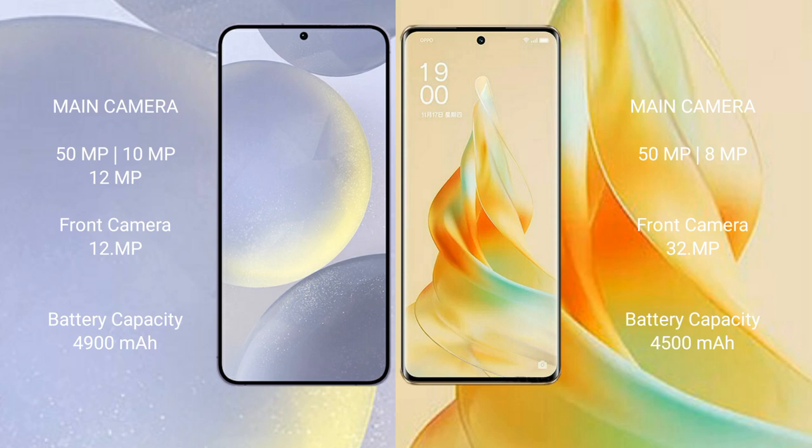Samsung Galaxy S24 Plus has a 4900mAh battery with 45W fast charging support. OPPO Reno 9 Pro has a 4500mAh battery with 67W fast charging support.